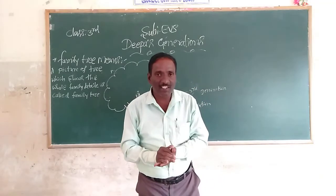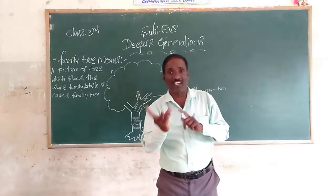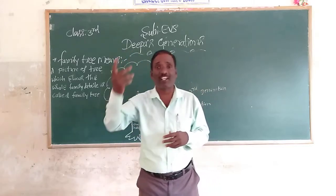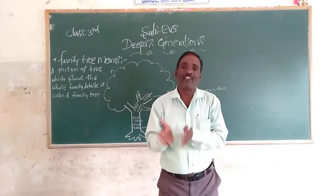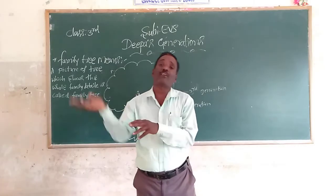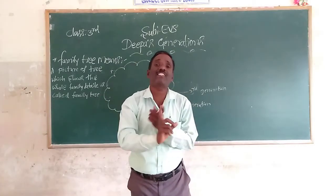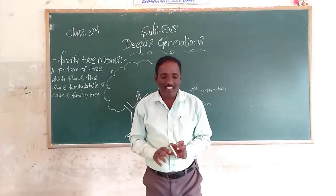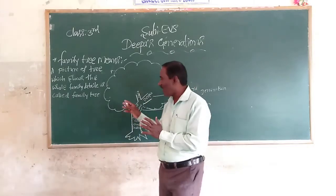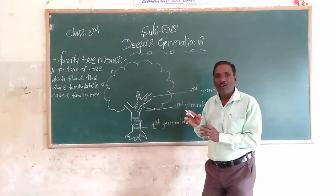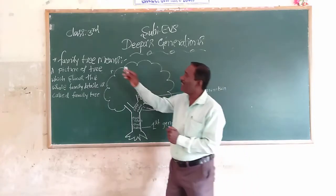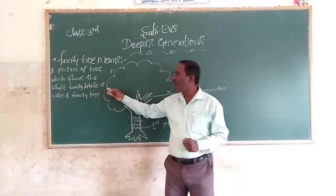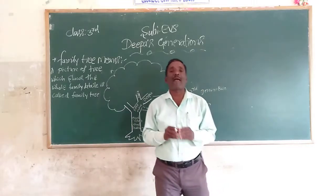We know the relationship between the members of three generations — like you and your father, grandfather and your forefather. The relationship between the three generations of a family. We draw a simple family tree. The family tree means a picture of a tree which shows the whole family — it is called family tree.